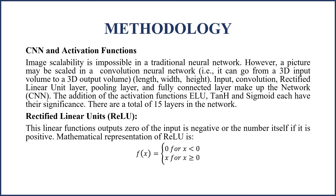Our methodology is based on CNN and activation functions. Image scalability is impossible in a traditional neural network; however, a picture may be scaled in a convolutional neural network. The CNN network is made up of input, convolution, rectified linear unit layer, pooling layer, and fully connected layer. The activation functions ReLU, ELU, TANH, and Sigmoid each have their significance, and there are a total of 15 layers in the network.